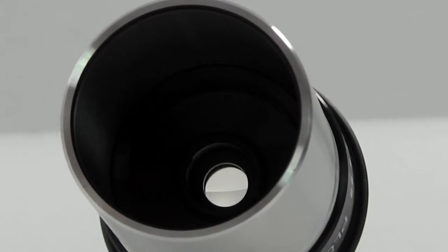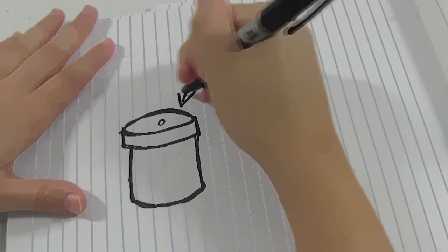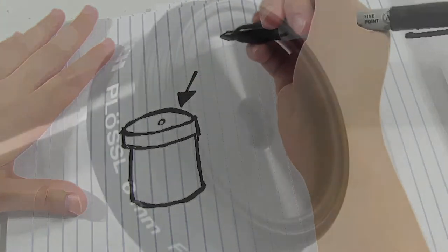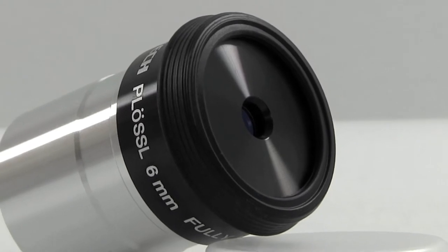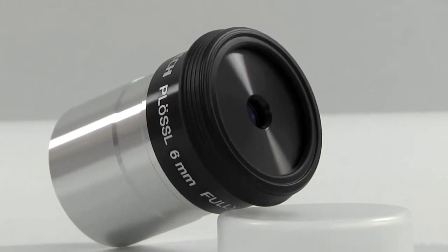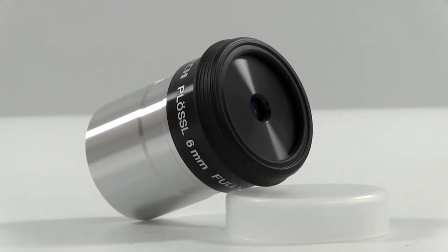The drawback really is five millimeters of eye relief, so it's short. If you wear glasses you're going to get some vignetting of your field. The eye lens up top, not the largest in the world, so kids may have a hard time finding the image.